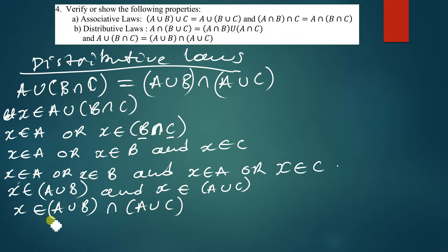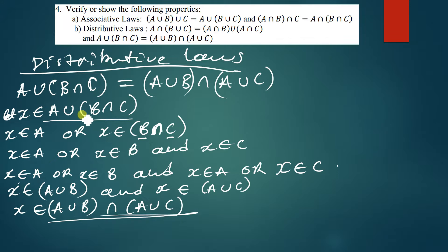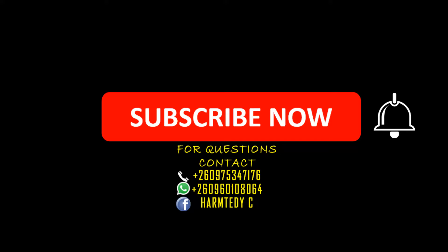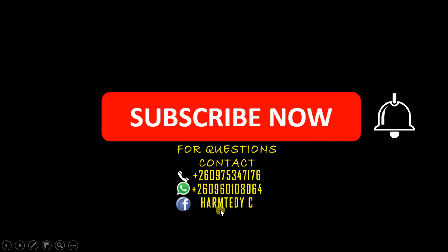Since x is a member of the right hand side and also a member of the left hand side, we can conclude that the solution of the left hand side is equal to the solution of the right hand side — the left hand side is a proper subset of the right hand side. This is how you prove the associative and distributive laws. If you have any questions in mathematics, physics, or chemistry, feel free to contact me. My name is Harmtedy — see you in the next tutorial. Shalom.